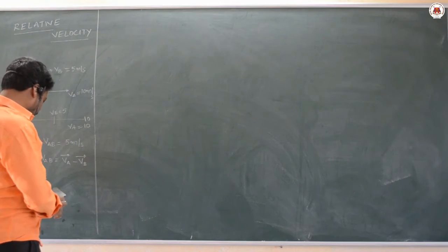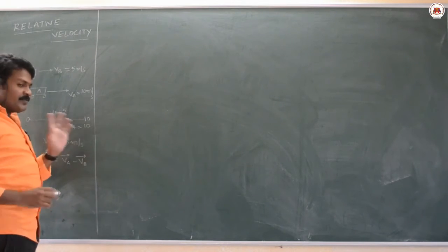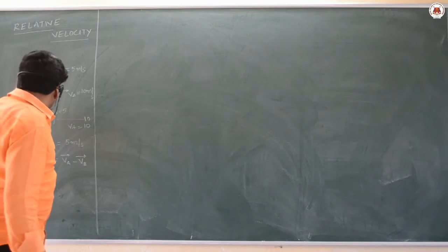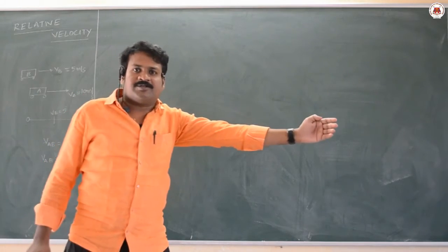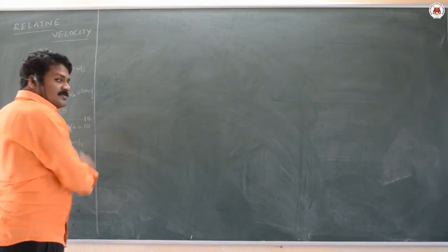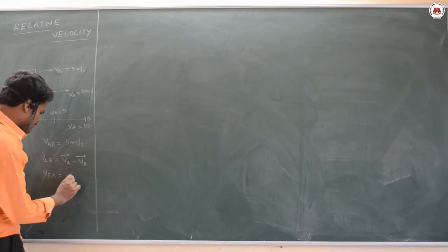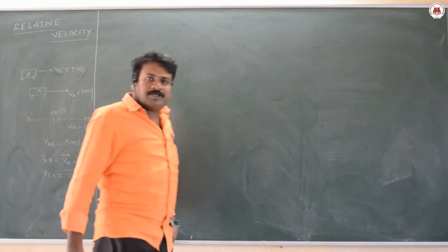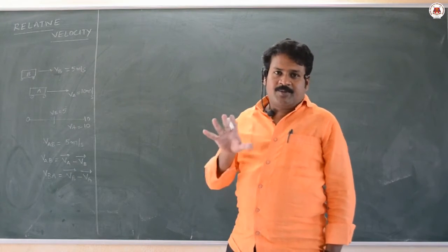Similarly, if you want to calculate velocity of B with respect to A, the reference point is A. From the ground, velocity of B is 5. But when counting from A, which is already at 10, you have to come back 5, giving minus 5. So velocity of B with respect to A is V_b minus V_a. Relative velocity means comparing with the other body. Motion and rest are relative terms.